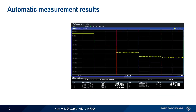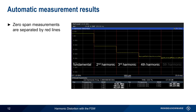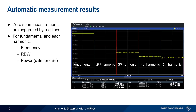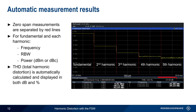In the measurement results, each zero-span is separated by red vertical lines. In this screenshot, we see values for the fundamental, second, third, fourth, and fifth harmonics. For the fundamental and each harmonic, the values for frequency, resolution bandwidth, and measured power are provided in a table. In addition, total harmonic distortion (THD) is automatically calculated for the measured harmonics and is given both as a percentage and in dB.